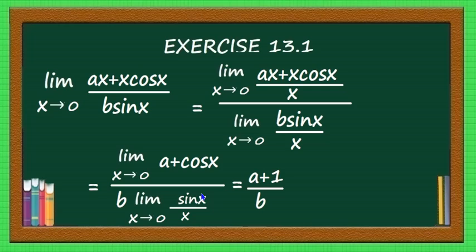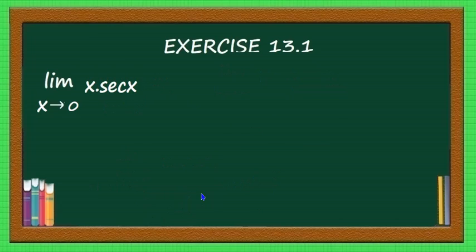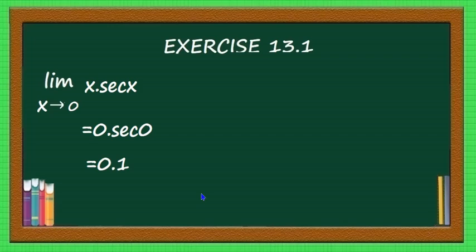That is the answer for this limit. The next question is: find limit x tending to 0 of x·sec(x). Substituting x = 0: 0 times sec(0). The value of sec(0) is 1, and 0 times 1 equals 0. So 0 is the limit of the given problem.